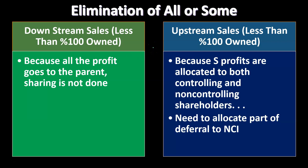However, if you're talking about an upstream transaction — from the subsidiary to the parent — when the subsidiary makes the sale and records income on that sale, some of that net income would go to the controlling interest (the parent company) and some would go to the non-controlling interest — the stockholders that aren't the parent company. Because the subsidiary's profits are allocated to both controlling and non-controlling interest, you need to allocate part of the deferral to the NCI.